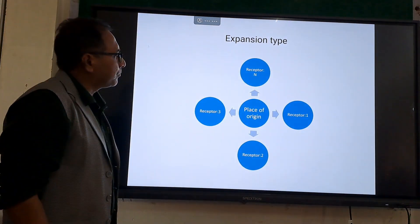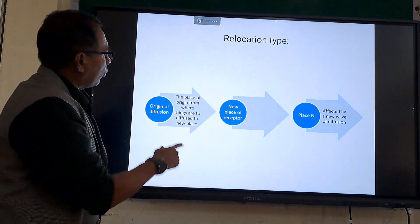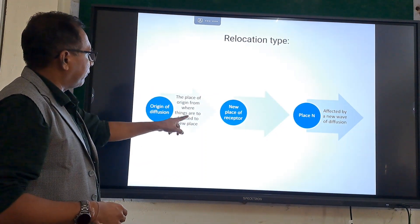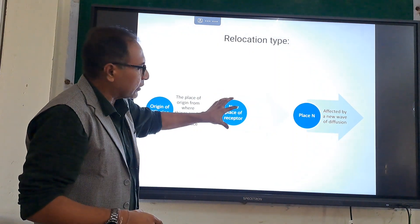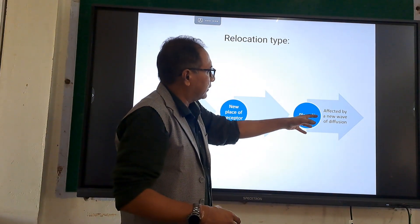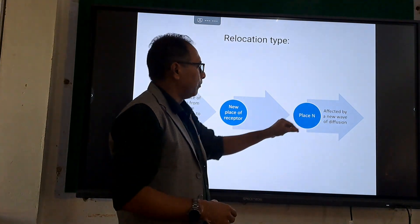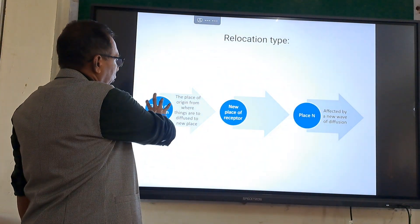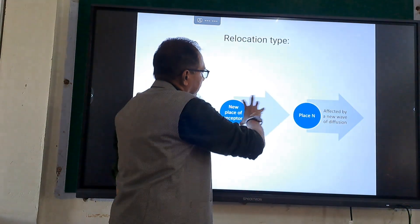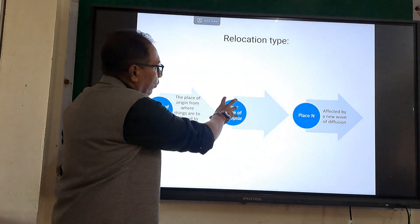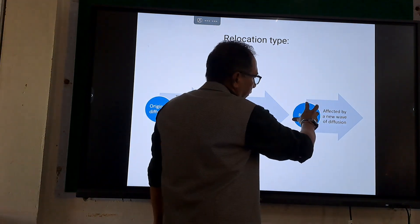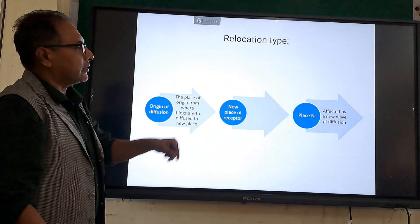The second diagrammatic explanation is the relocation type. As stated earlier, the place of origin also changes. Things are diffused from the original place to a new place, and that new place becomes both a receptor and a new origin from which diffusion continues to a second or nth place — a new wave of diffusion from a new place of origin. Subsequently, another wave emanates from another new place of origin. That is why it is named the relocation type.